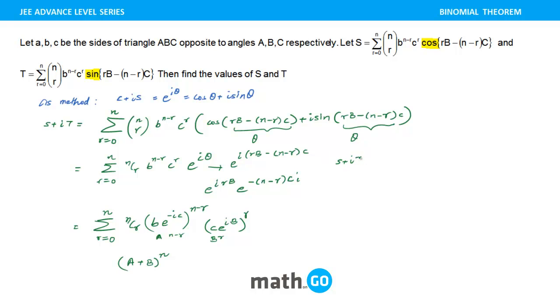So what I can say that S plus iT, right, is equal to bang on, we have A plus B raised to power n. So let's just put the values of A and B. This is the value plus (Ce^(iB)) raised to power n. This is the value.